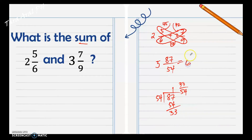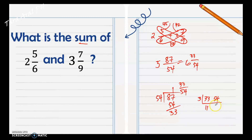Take note that thirty-three and fifty-four still have a common factor, so we can simplify to lowest terms using the continuous division method. Dividing by three, we get eleven and eighteen. Since there is no common factor between eleven and eighteen other than one, our final answer is six and eleven eighteenths.